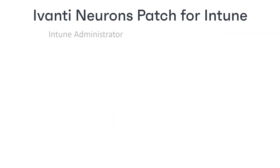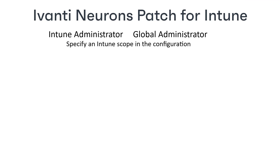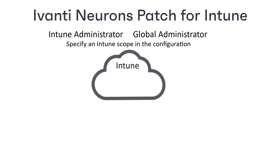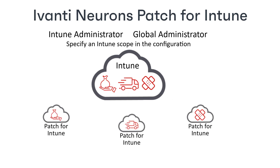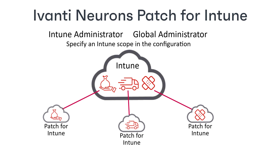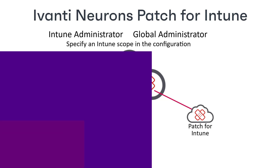Users with the Intune administrator or global administrator role in Intune can specify an Intune scope when configuring Evante Neuron's patch for Intune. This means that if your organization has a single Intune tenant with multiple scopes, you can have a separate Evante Neuron tenant for each individual scope on that Intune tenant. This enables the central function of the organization to monitor everything and manage the central Intune application, while the separate regions or departments see and manage only their own data through Evante Neuron's patch for Intune.